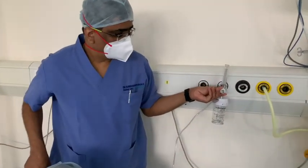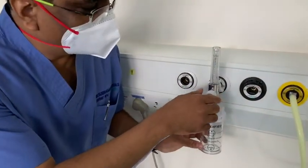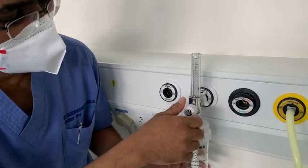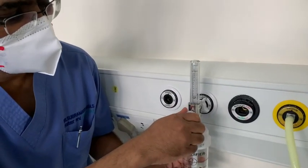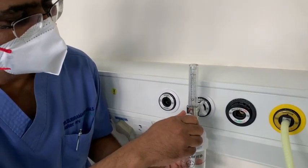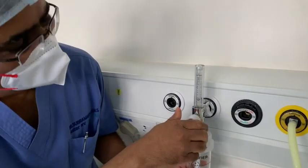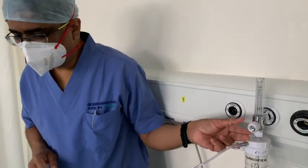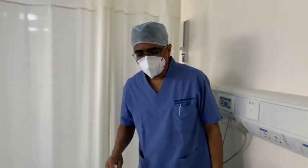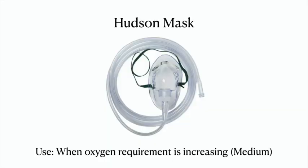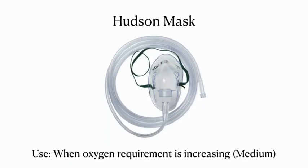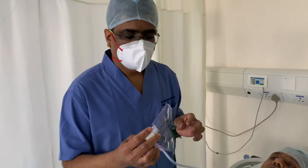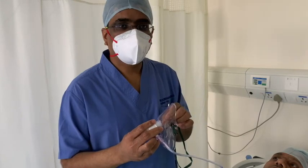On a normal flow meter you can go up to 15 liters, but in this case we need to give only around two or three liters. If we give more than two or three liters it becomes very uncomfortable and you can't use it for a very long time.